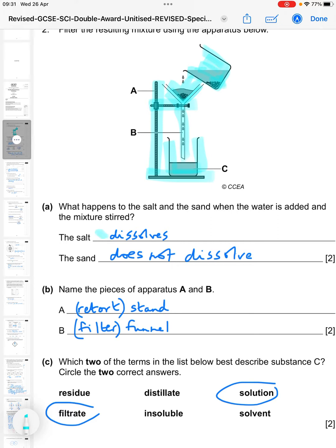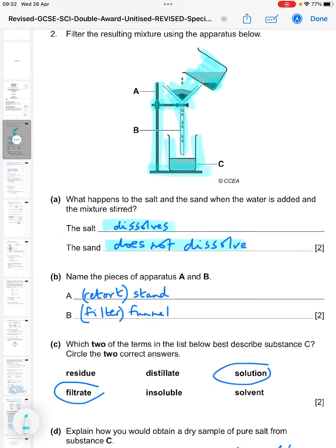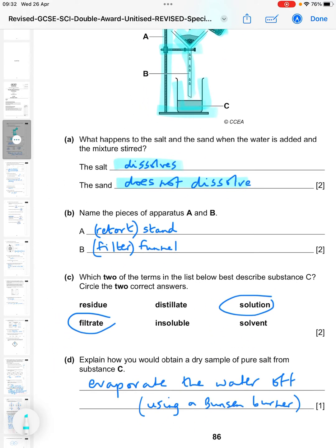So what happens to the salt and the sand when the water is added and the mixture is stirred? Well, the salt will dissolve. That's the word they're looking for. And the sand does not dissolve. You may be tempted to say it sinks or something, but the best thing to say is it doesn't dissolve.